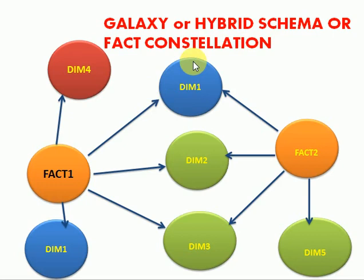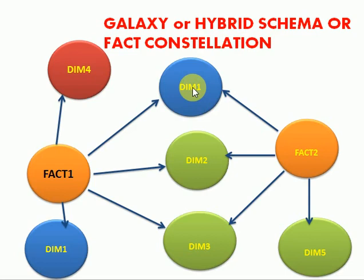We call it a fact constellation because there is an interconnection between multiple stars through common dimension tables. Those dimensions we will be calling as conformed dimensions. Conformed dimensions are any dimension which is used across all the data marts, and those dimensions will be used in this galaxy schema.